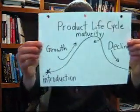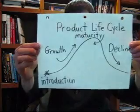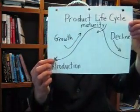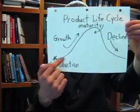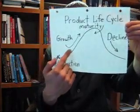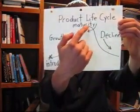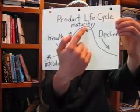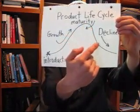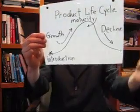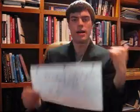Once more, let me show you the product life cycle. First we start introducing our books. We sell a little, a little, a lot — we're growing a lot, selling a lot of books. Then it matures, we have maturity, it peaks, and then it declines. So the product life cycle is introduction, growth, maturity, and decline.